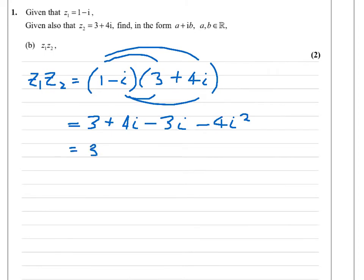So, plus 4i minus 3i is just plus i. And then i squared is the same as minus 1. So, of course, you can see all of this becomes plus 4, and so we have the answer 7 plus i. Done. Nice and easy.